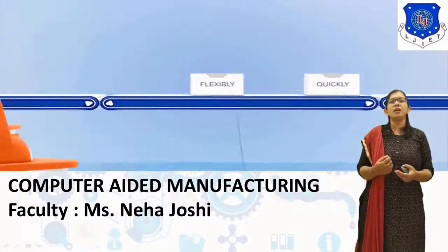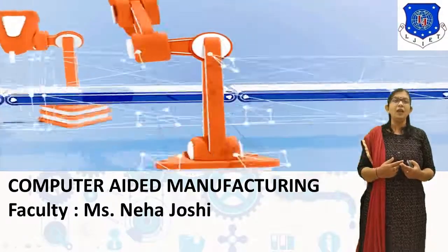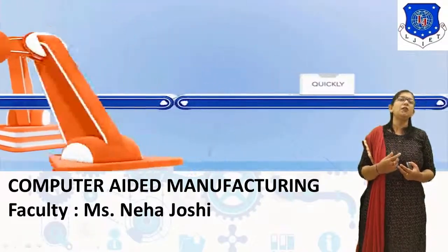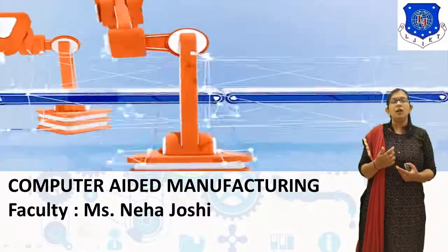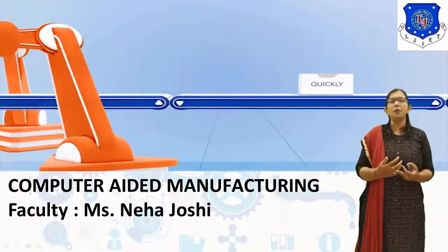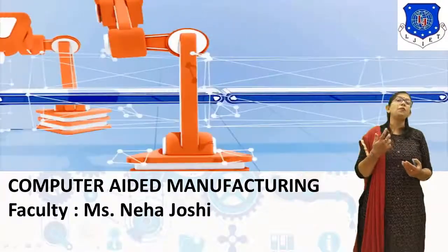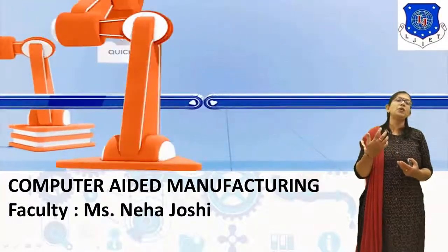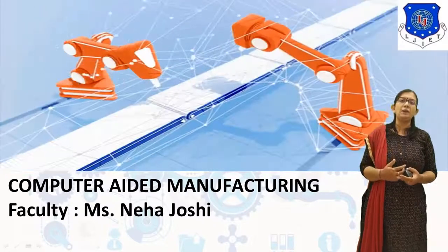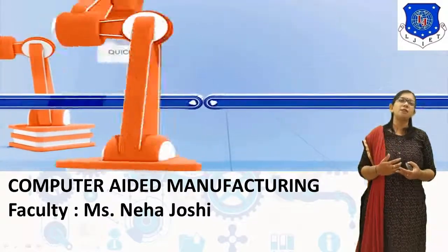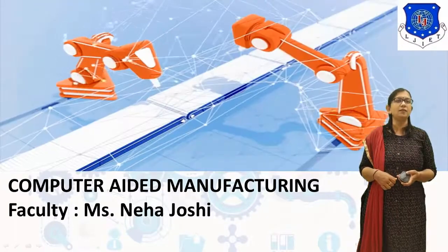Today we will start our 6th chapter, that is Robotics Technology. In the previous session, we covered our 5th chapter, Flexible Manufacturing System. In that, we covered different topics like what is Flexible Manufacturing System, types of layout which are used in Flexible Manufacturing System, Automated Guided Vehicles, ASRS System, Tool Management, and Cellular Manufacturing System.